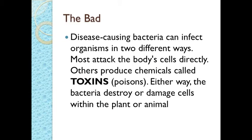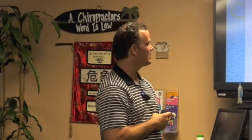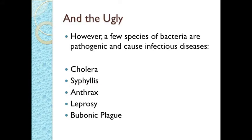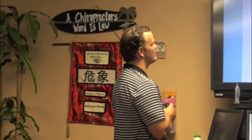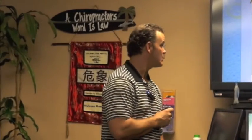The bad disease-causing bacteria can attack the body cells directly, and some actually produce toxins — either way, they're destroying or damaging cells. And the ugly: these conditions are caused by a few species of pathogenic bacteria. You've got cholera, syphilis, anthrax, leprosy, and this little thing called the bubonic plague — not good, very ugly.